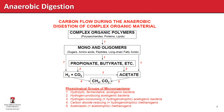Looking at the different microbial groups: for hydrolysis, fermentation, and initial conversions we have hydrolytic, fermentative, and acetogenic bacteria. For hydrogen-producing reactions we have hydrogen-producing acidogenic bacteria. For the interconversion step, we have hydrogen-consuming or hydrogenotrophic acidogenic bacteria, which take hydrogen and CO2 and produce acetate. Then we have hydrogenotrophic methanogens and acetoclastic methanogens completing the process.